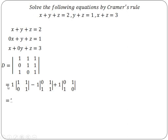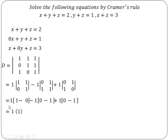Expanding D: the first element 1 as it is, into bracket — principal diagonal 1 into 1 is 1, middle sign minus 0 into 1 is 0. Minus 1 as it is, into bracket — 0 into 1 is 0, minus 1 into 1 is 1. Plus 1 as it is — 0 multiply 0 is 0, minus 1 multiply 1 is 1. That equals 1 into 1, minus 1 into minus 1 plus 1, plus 1 into minus 1. Therefore D equals 1.